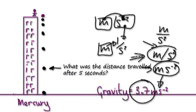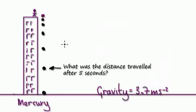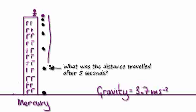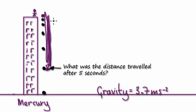So sometimes you see acceleration written as m/s², sometimes it's written as m·s⁻². I'm standing on top of a building which happens to be on Mercury. I'm going to drop a cannonball. I want to know the distance traveled after 5 seconds — so after 5 seconds, it will get to this point here. What is this distance here?